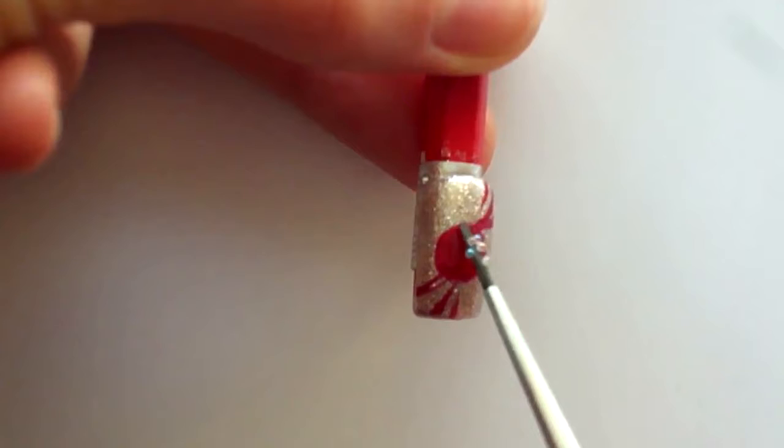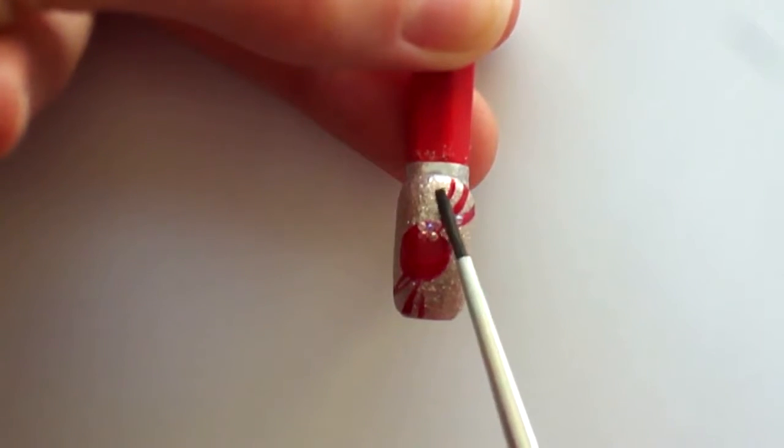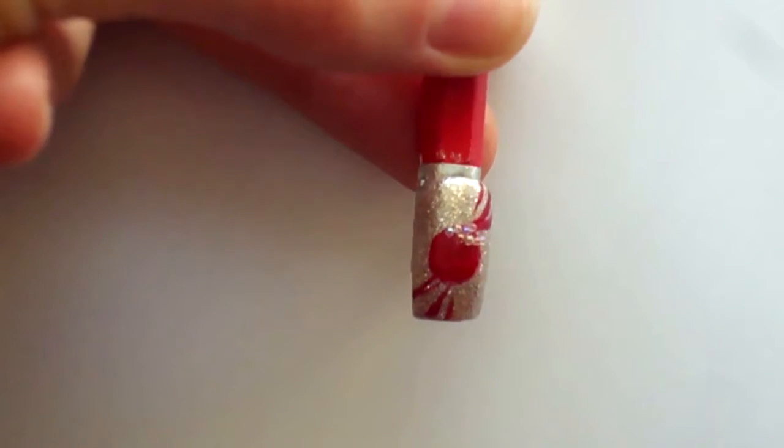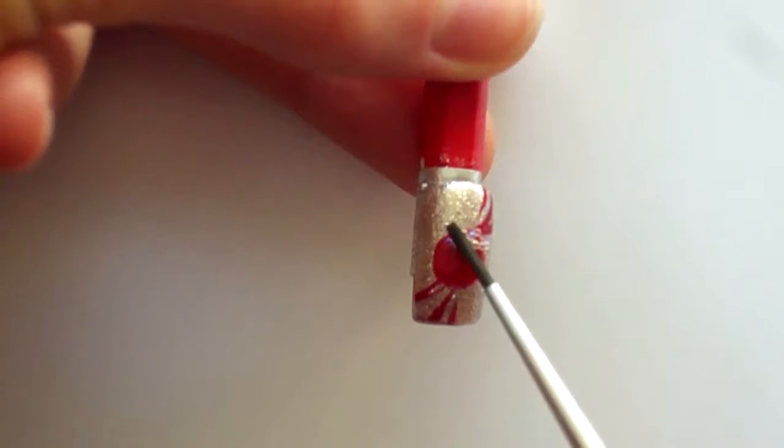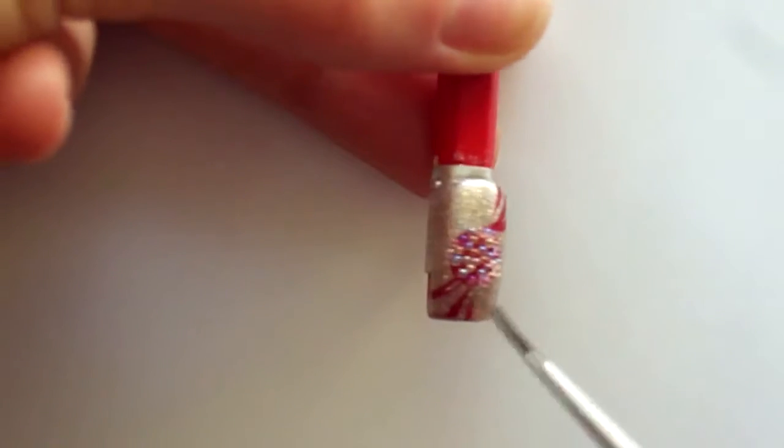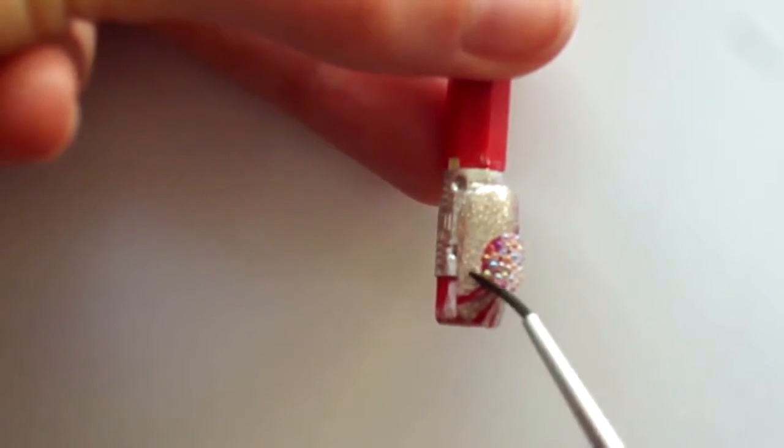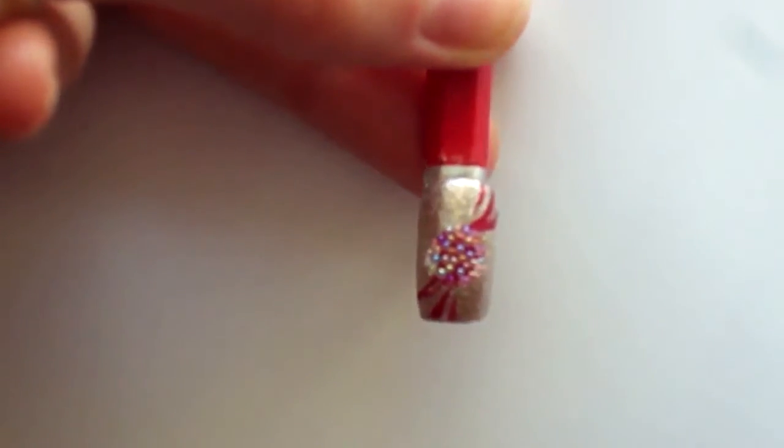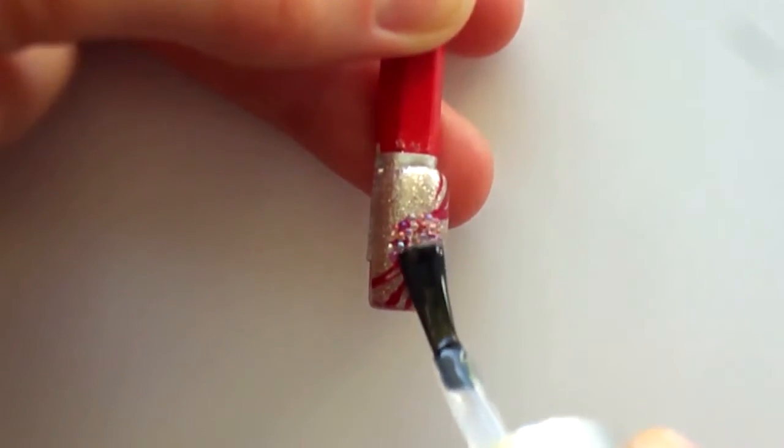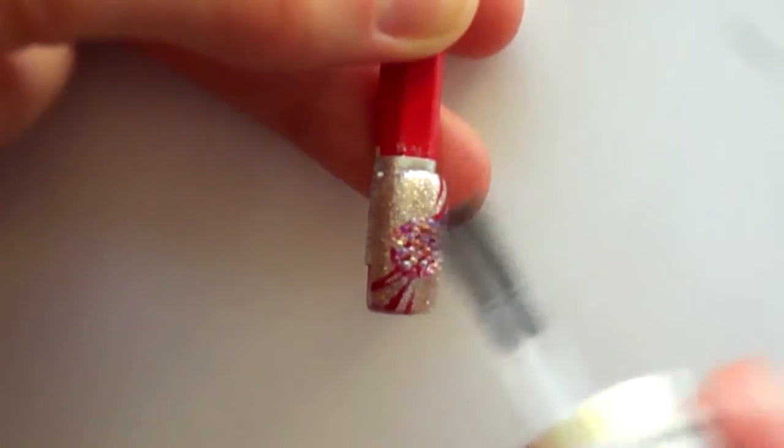Then I'll be using these small beads and apply them onto the circle in the middle of the nail using a damp brush. Next, I'll be using a little bit more of the top coat and paint it over the beads to secure them.